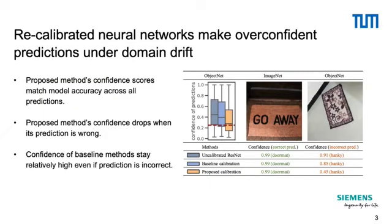The key issue here is that neural networks as well as post-hoc calibration methods are trained on a particular domain. However, in real-world applications, models have to cope with samples that are not necessarily drawn from the same distribution as they were trained on. Recalibrated neural networks therefore make overconfident predictions under domain drift.